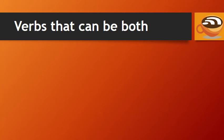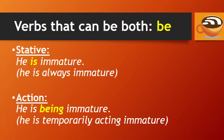Some verbs can be both action verbs and stative verbs, depending on their meaning and context. Here's an example: the verb 'be.' If you say 'he is immature,' be is a stative verb, meaning he is always immature. But if you say 'he is being immature,' then be is an action verb, meaning he is temporarily acting immature.